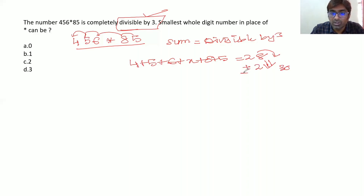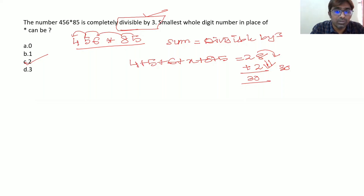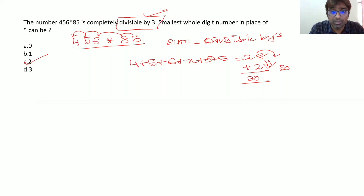We need to add 2 to 28 to get 30, so the missing digit is 2. Since they asked for the smallest whole number, the answer is 2 rather than 8 (which gives 36) or 5 (which gives 33). The smallest whole number that makes the sum divisible by 3 is 2.